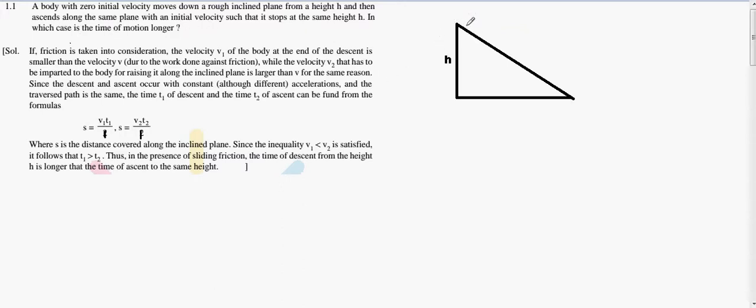Let me explain the question. According to the question, there is a body that moves with velocity v1 and finally reaches the bottom. After this, it ascends along the same plane and reaches the same height.